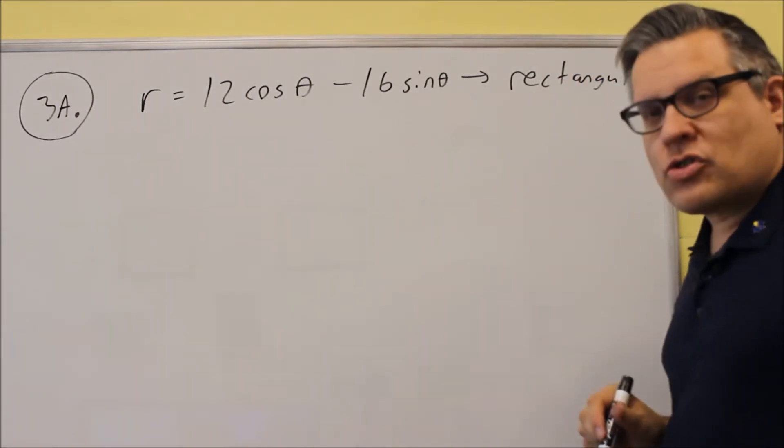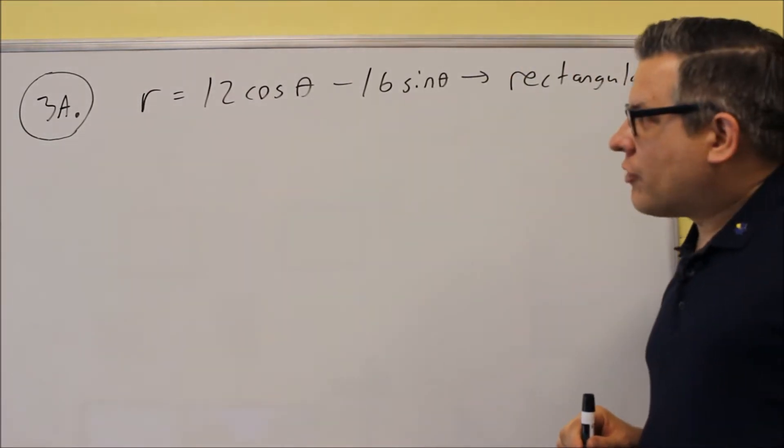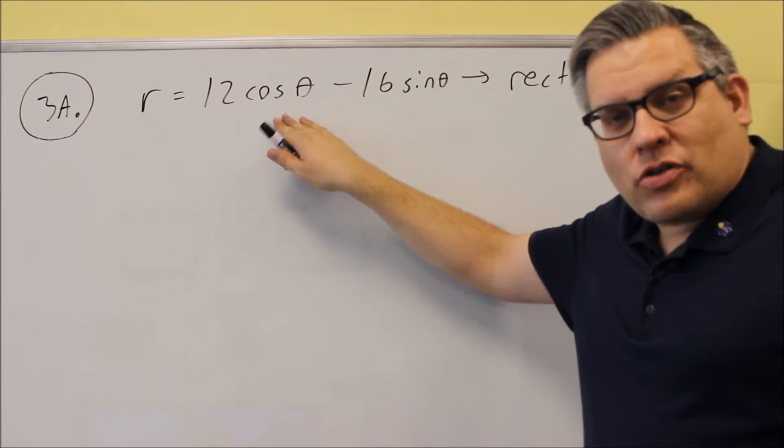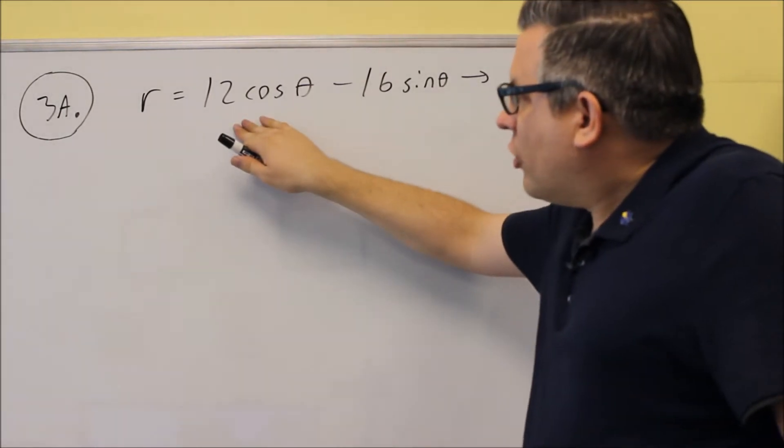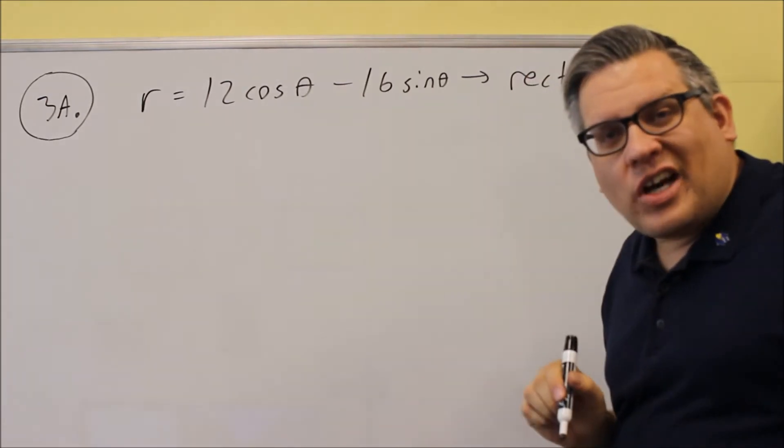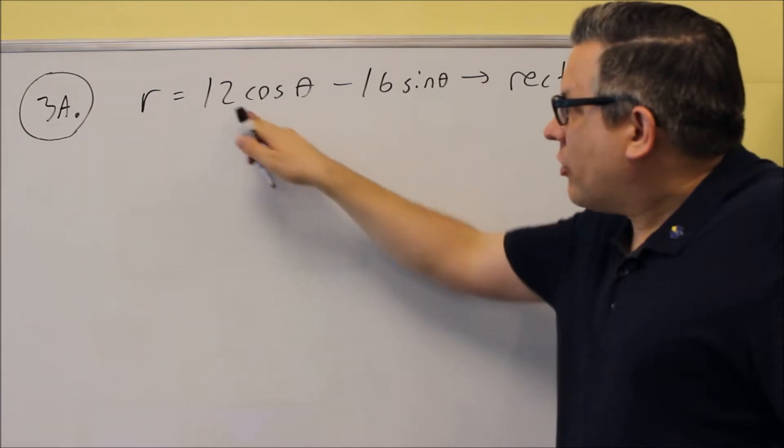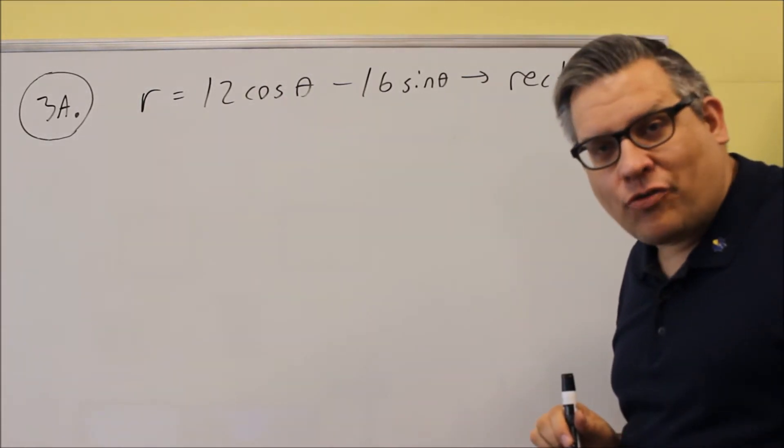So let's start off with this one. Now in order to convert this, we have to look for the ways to change polar into rectangular. Now there's a formula that you want to know, which is going to be if you have r cosine, that's x, and r sine theta is y. Now we don't have that here. We have just cosine and sine. We don't have the r that comes in front of it.